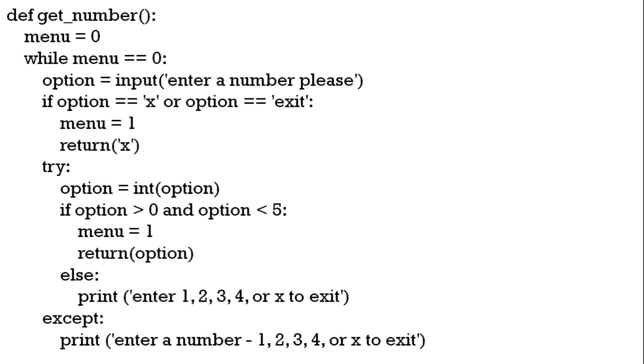We've put this in a try statement and underneath try is the except. So if the user puts in something that's not an integer when option equals int option fails it will go to the except where they will print and it will tell the user to enter a number one two three four or X to exit. So here the program won't crash it will just tell the user to make sure they enter a correct number. So that's the error handling.